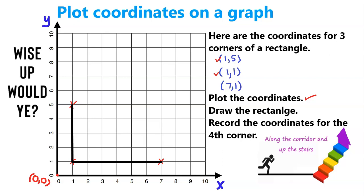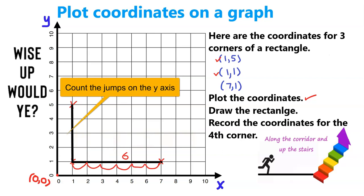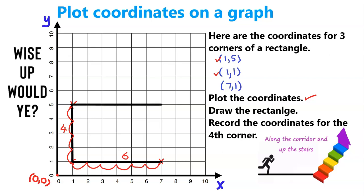So let's look at the lengths. We can see that this horizontal length is 1, 2, 3, 4, 5, 6. It's got a length of 6. And the vertical length is 1, 2, 3, 4, so it's got a measure of 4. We know that rectangles have equal opposite lengths, so we can draw in the missing lengths from the information we have. Now we can see exactly where our fourth corner belongs.